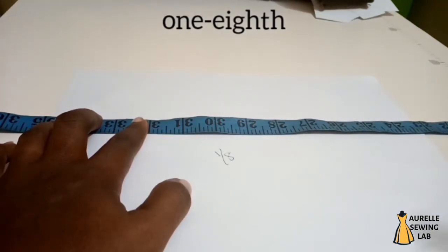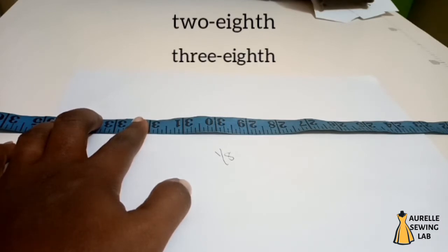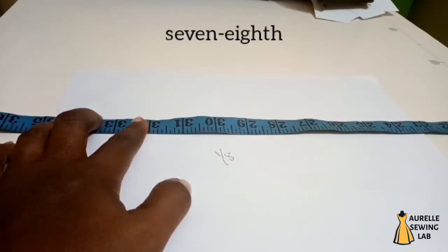The second one is two eight, three eight, that's two over eight, three over eight, until you get to the seventh one which is seven eight and then you get to 29.